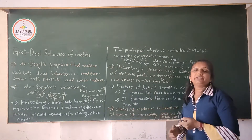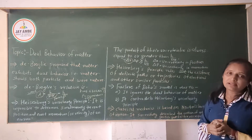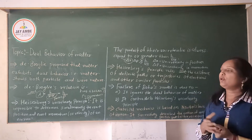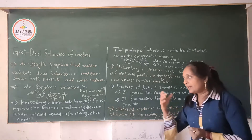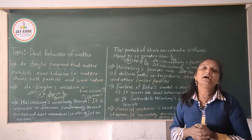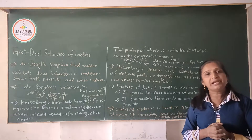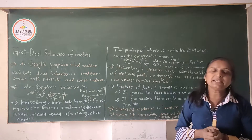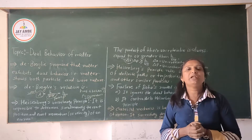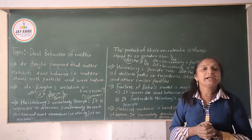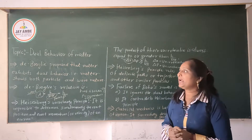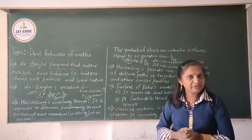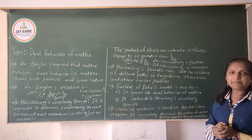Therefore, Bohr's model assumed and explained that both position and momentum of the electron could be exactly determined — which contradicts the Heisenberg uncertainty principle. This is the dual behavior of matter as a limitation of Bohr's model. The model violates Heisenberg's uncertainty principle.